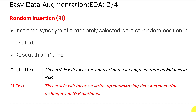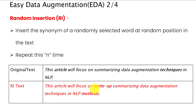The next easy data augmentation technique is random insertion. In random insertion, we randomly insert the synonym of a selected word at a random position in the text and repeat this process N times. For the same original text, we insert synonyms of 'article' and 'technique' — adding 'write-up' as a synonym of 'article' and 'method' as a synonym of 'technique' — to obtain a new sentence that is a variation of the original. We can repeat this process several times to obtain different variations.